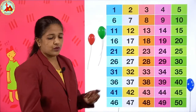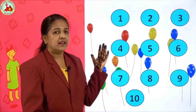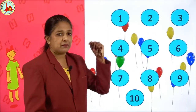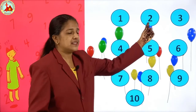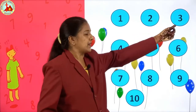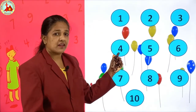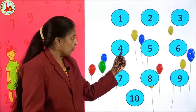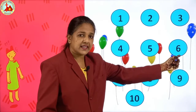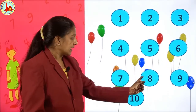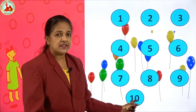Very good. Now step by step, one by one we will again revise. You all tell me which number it is? 1. Very good. Next is 2. Next 3. Tell me fast: 4, then 5, then 6, 7, 8, 9 and 10.